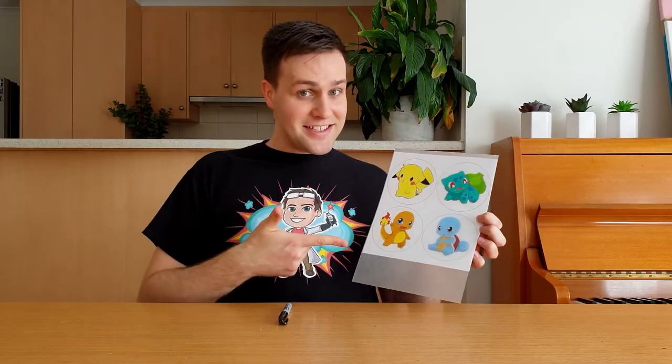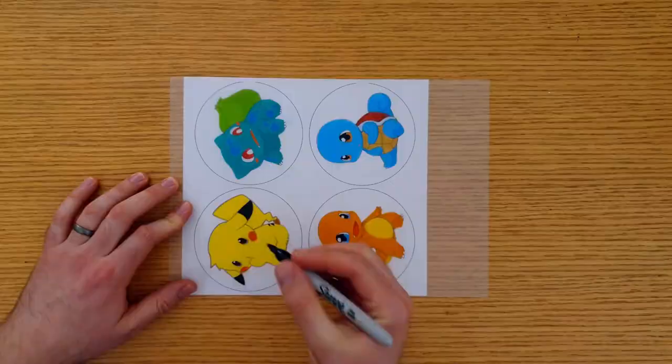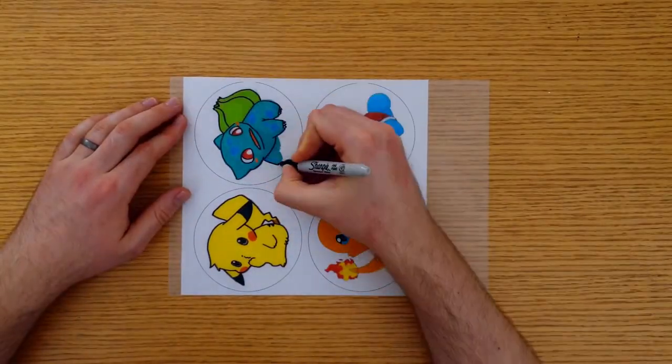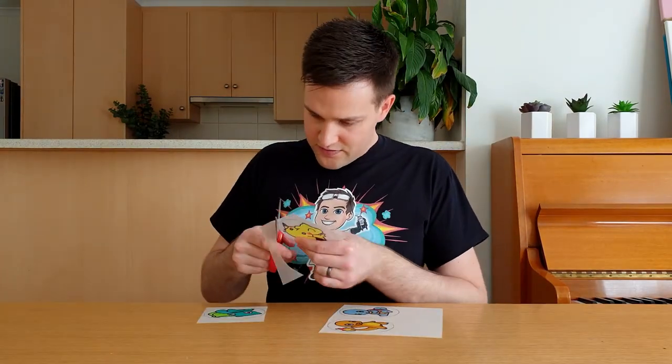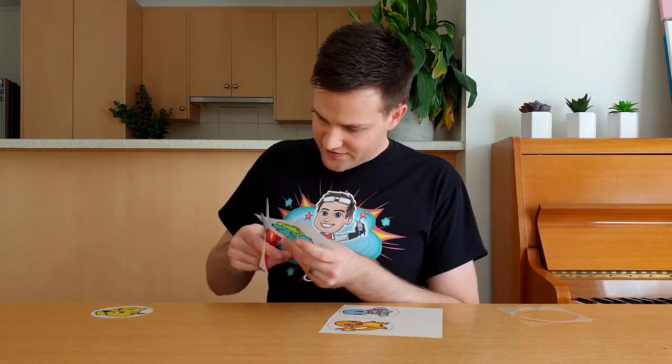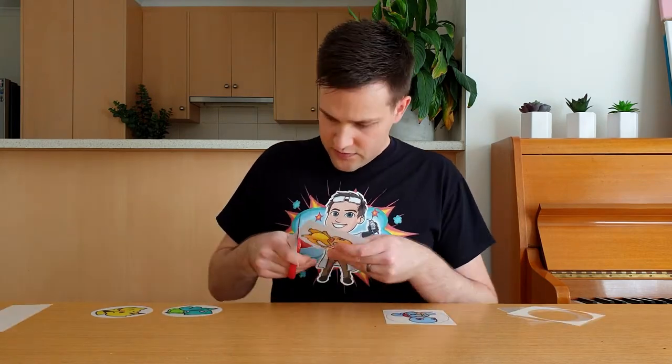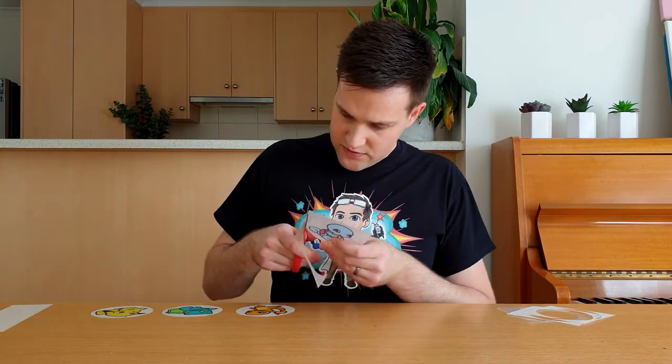Then go around the edges with a thin permanent marker. You can skip this step if you want, but I like how it looks with an outline. The next step is to cut them out. You can cut the plastic with a regular pair of scissors. It's up to you if you want to cut along the lines of your drawing, or if you want to cut a shape around it.